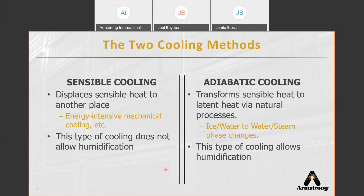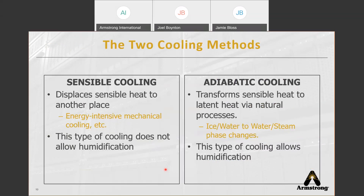That brings us to the two forms of cooling and humidifying in the data center world. These two methods are sensible cooling and adiabatic cooling. Sensible cooling displaces sensible heat to another place — an example is mechanical cooling, which is typically very energy intensive — and this type of cooling does not allow humidification. Contrary to that is adiabatic cooling, which transforms sensible heat to latent heat via natural processes, such as ice to water or water to steam — also known as phase changes. This type of cooling allows for humidification, which is very ideal for data centers since they need both.